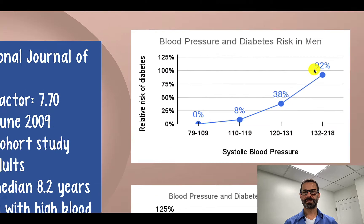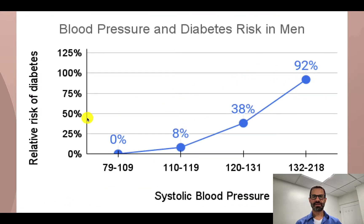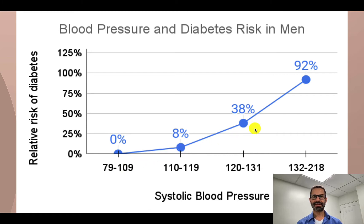Let's take a look at the results. This is the graph for men. The x-axis shows systolic blood pressure, and the y-axis shows the relative risk of diabetes during the follow-up period. Compared to men whose systolic — the top number blood pressure — was 79 to 109, the risk of diabetes increased with increasing blood pressure, as high as a 92% relative increased risk of developing diabetes for those whose blood pressure was 132 or greater.